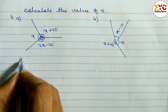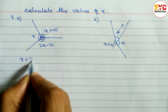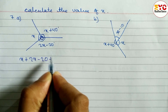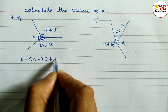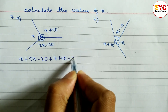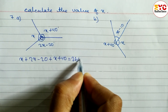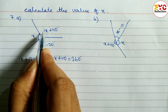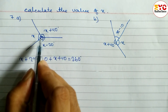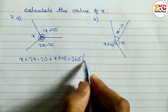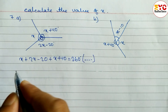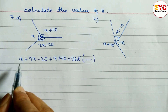We can write: x plus x plus 2x minus 20 plus x plus 40 is equal to 360. The reason is that the sum of all angles equals 360 degrees, because they form a complete angle or complete turn.